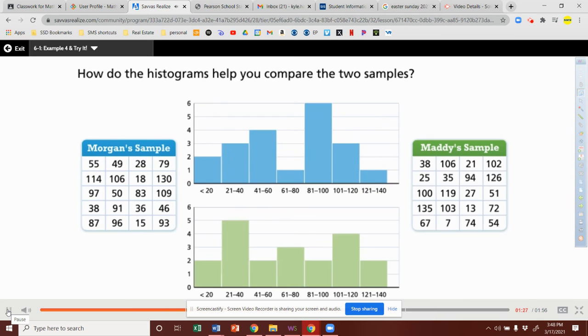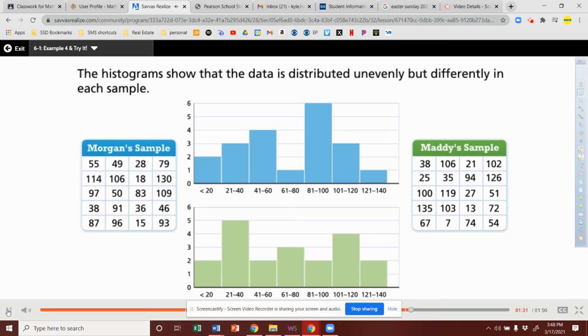How do the histograms help you compare the two samples? The histograms show that the data is distributed unevenly but differently in each sample. Every range is represented with at least one value and at most six values in a sample.